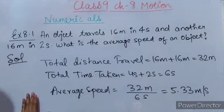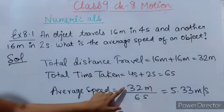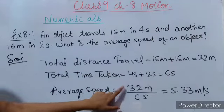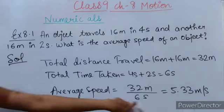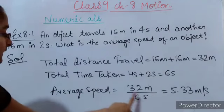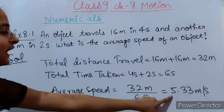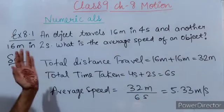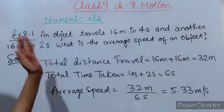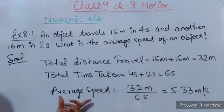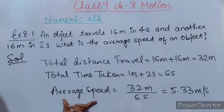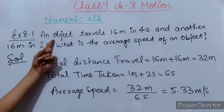Average speed equals total distance travelled by body divided by total time taken. So 32 divided by 6 gives 5.33 meters per second. This is the average speed of the object.